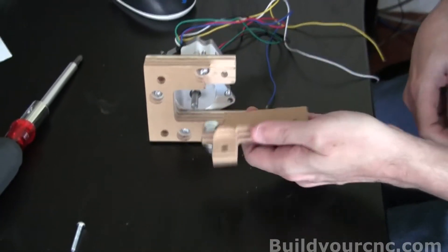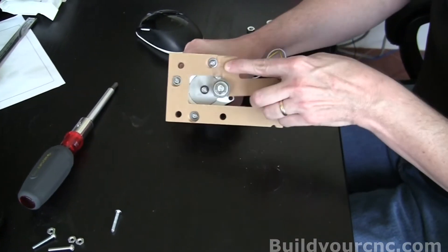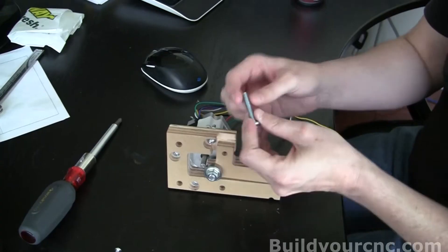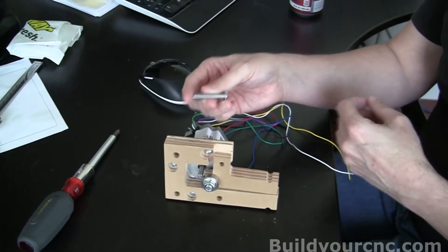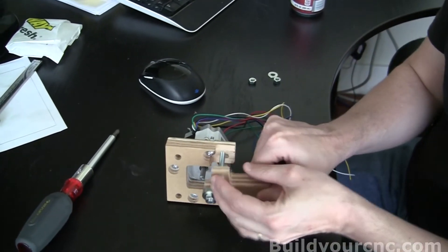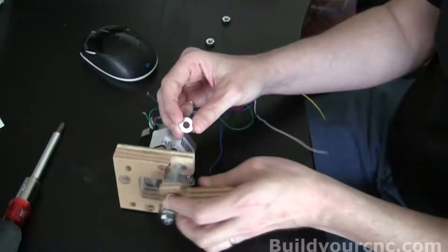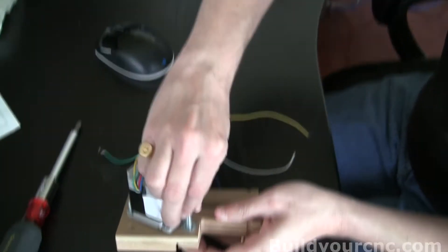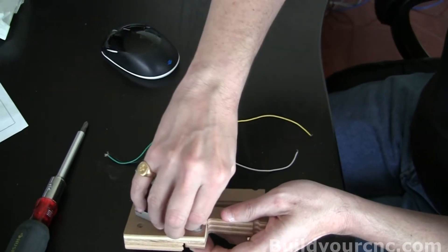Now we can attach this piece to the extruder motor mount. We're going to be using a quarter inch screw, one and a half inches in length. We're going to put it through this hole. We'll have a washer that goes on this point. And we're going to be using two nuts to fasten this down.